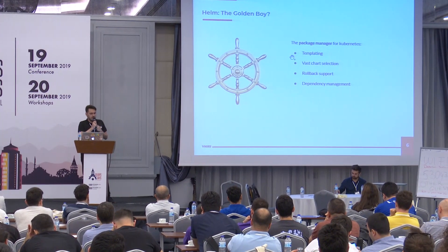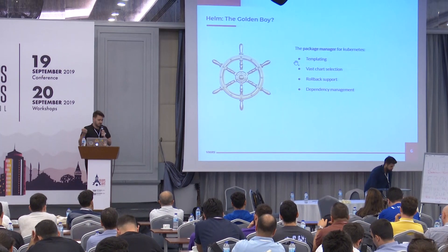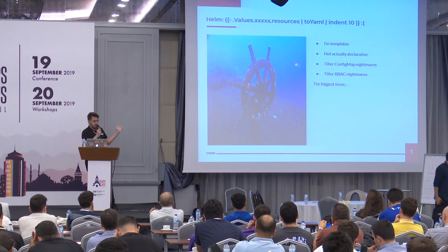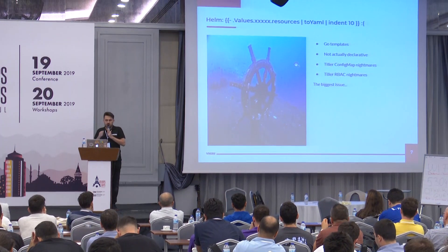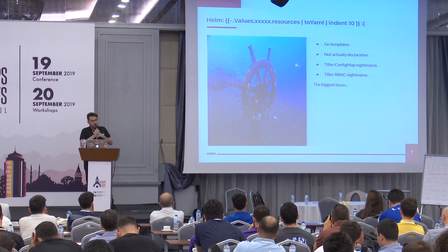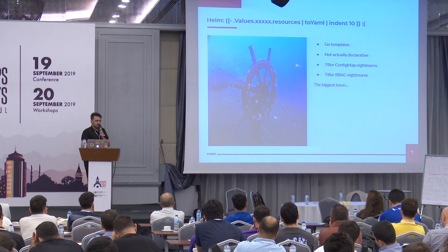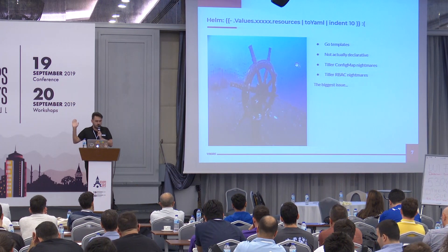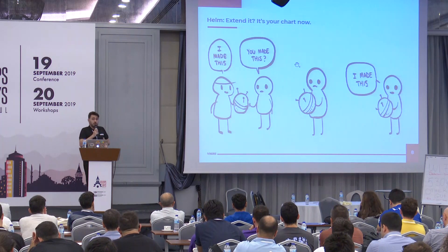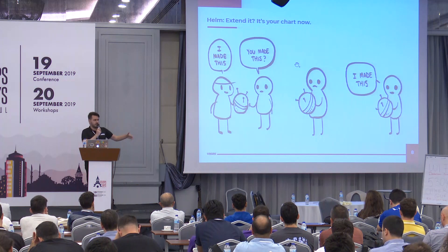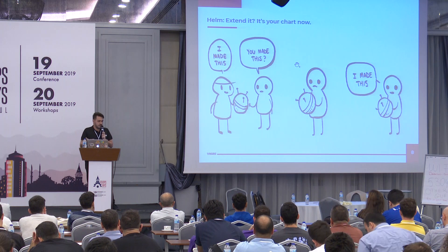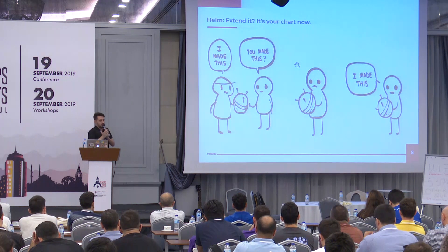So when you try to write it yourself, you get into some issues — like a shipwreck — because you use Go templates, there's too much logic in it, it's not actually declarative. You also have a lot of issues with Tiller, which is another Ignite topic itself. But the biggest issue is, if you want to use Helm and extend it for yourself, it's not your chart. You're not able to fork it, modify it, or rebase it. So when you pick something already existing, it's not yours if you want to add something to it.